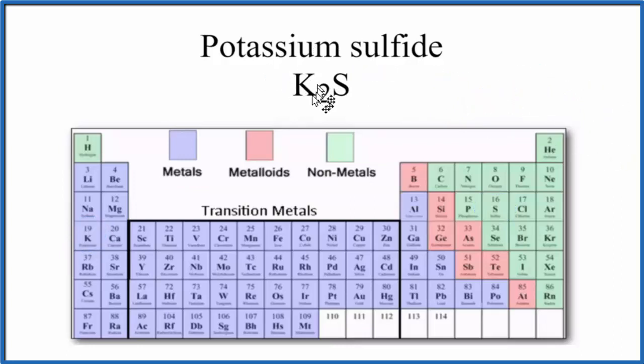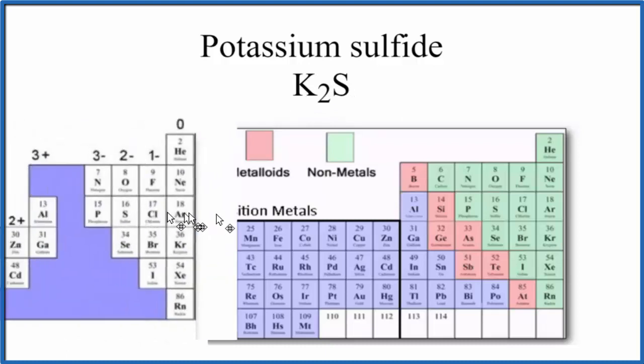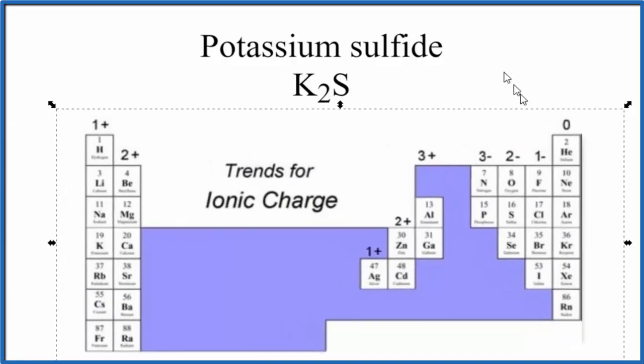You might ask why we have two potassium atoms for one sulfur atom. If we look at the periodic table here divided by groups, the charge on each group - potassium, right here, is 1 plus.